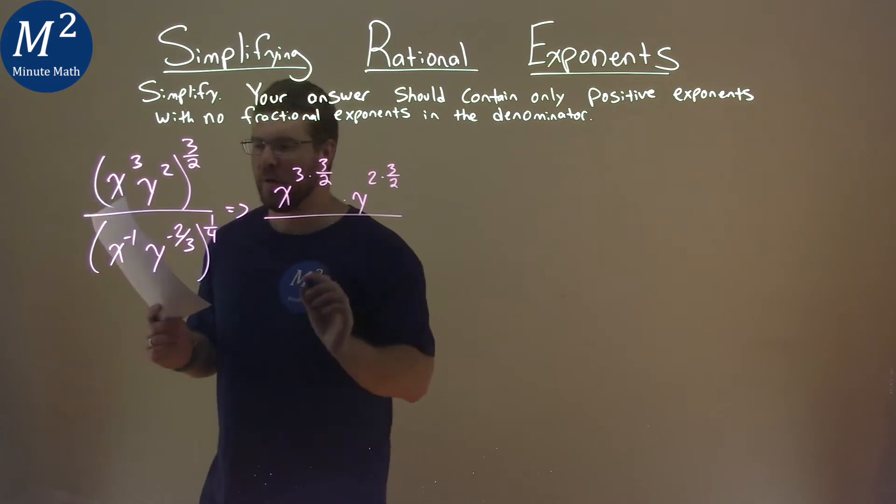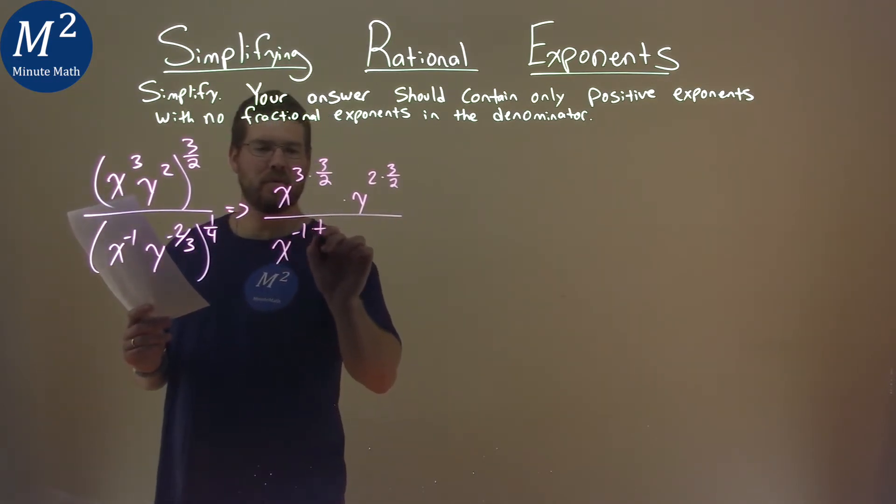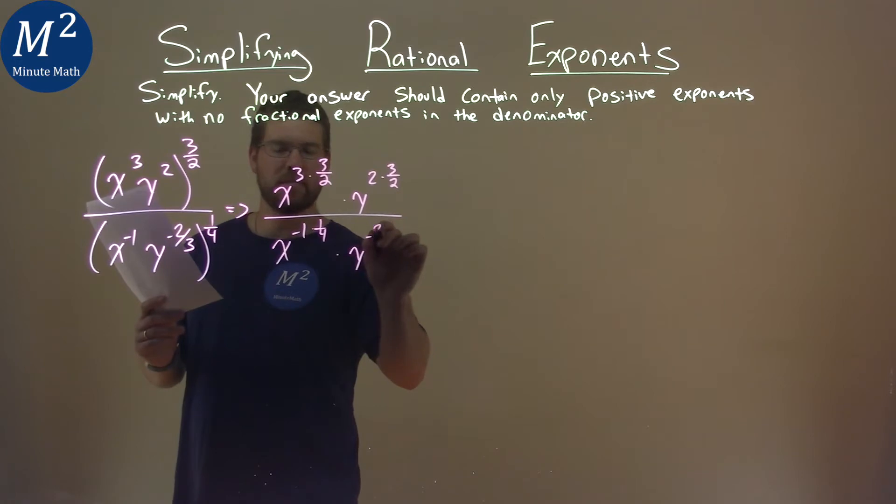over x to the negative one times one-fourth, times y to the negative two-thirds times one-fourth.